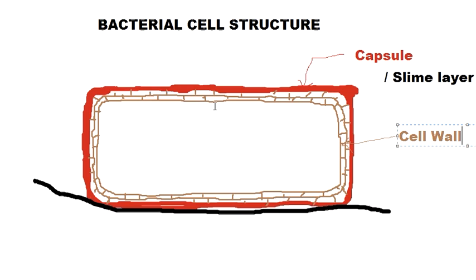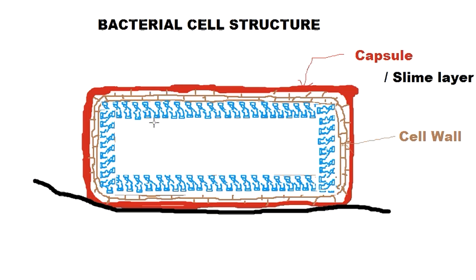The next layer is the cell membrane, which is present inside the cell wall. The cell wall is completely permeable — it has no selectivity, so it allows both harmful and useful substances inside the bacteria. The selectivity is done by the cell membrane which is present inside the cell wall. Let me draw the membrane — we now have our cell membrane inside.